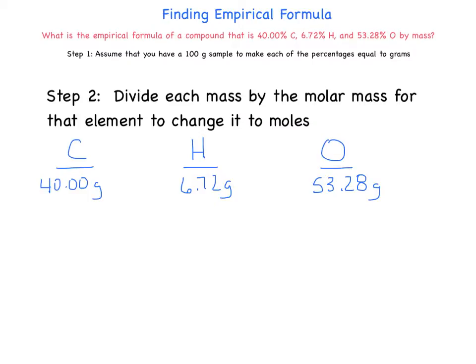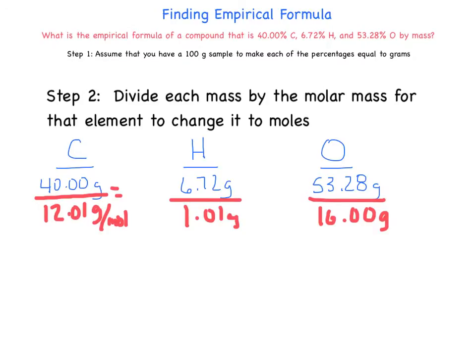Now our second step is we're going to divide each mass by the molar mass for that element and change it to moles. So here we go. Divide it by the molar mass of carbon, which is 12.01. Now that's actually grams per mole, so the answer that we're going to get in here is going to be moles. And 6.72 divided by 1.01 grams per mole, and this is going to be divided by 16.00 grams per mole. And when I plug these in my handy-dandy calculator, I get 3.331 here, and 6.65 here, and 3.330 here. Now those would really be moles, and those are the ratios of how they match up, but they're not pretty numbers. So we're going to try to make them pretty.